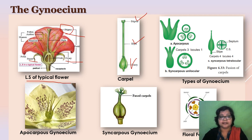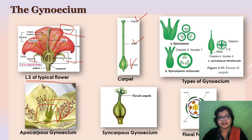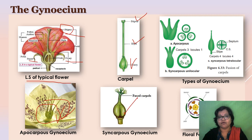We have learned that if more than one carpels are present and the carpels are free from each other, then it is called apocarpous gynoecium. In syncarpous gynoecium, more than one pistils are present but they are fused together. Here we can see two ovaries but one style — that is the fused condition.